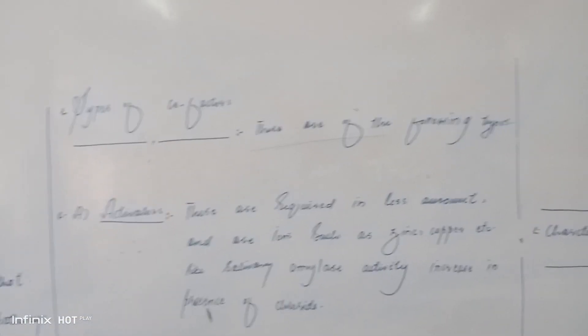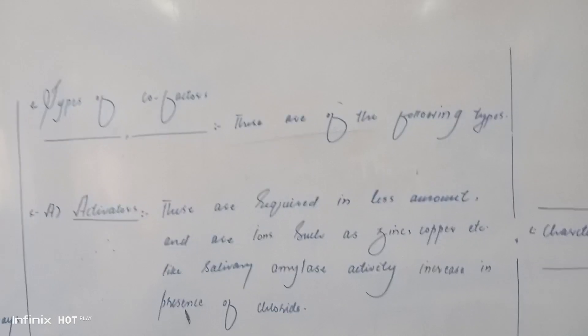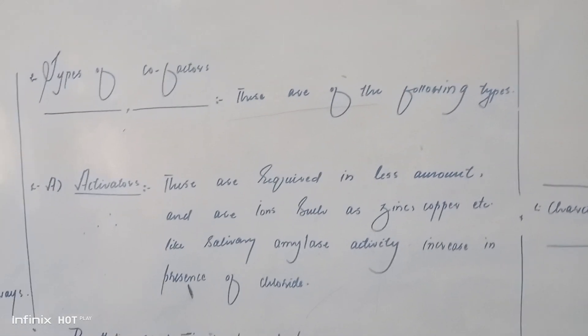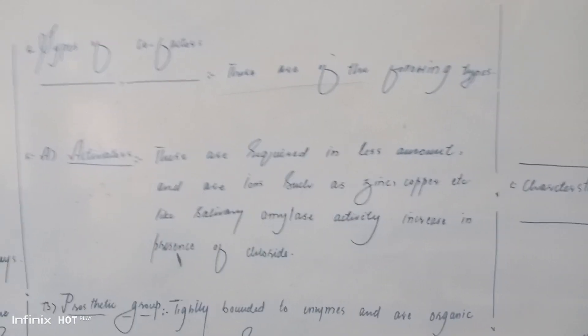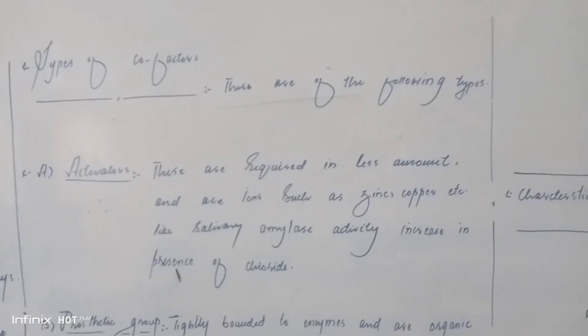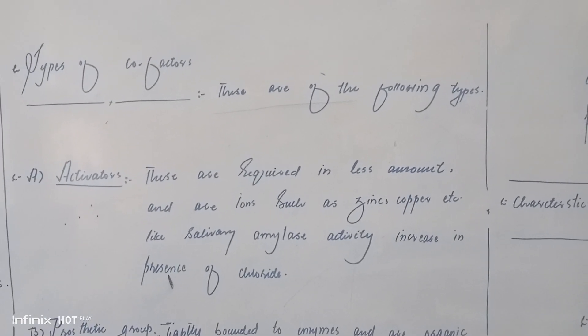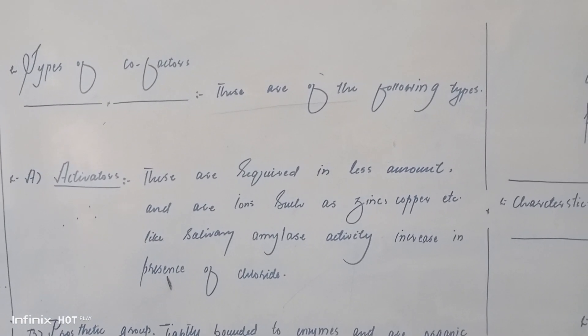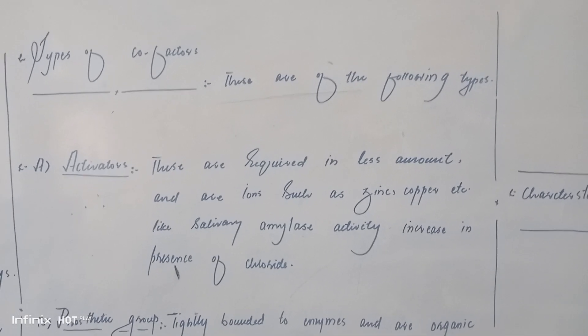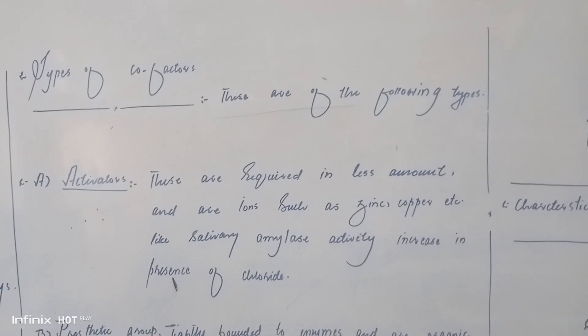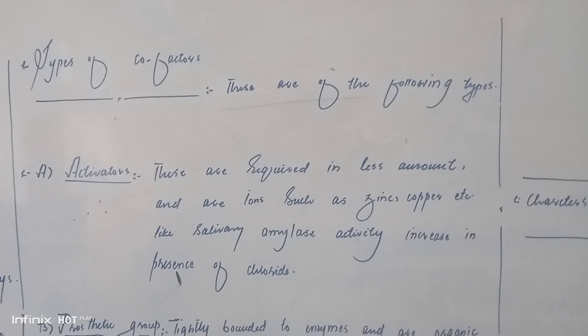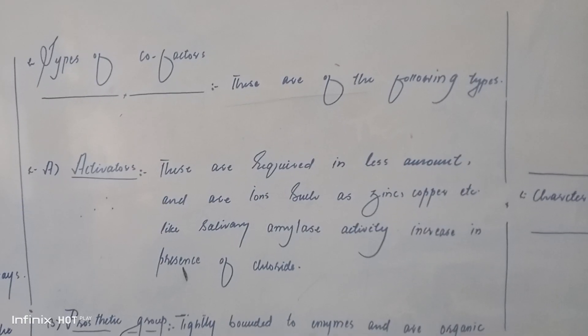Co-factors - types of co-factors. These are of the following types: Activators. Co-factors or activators are required in less amount and are ions such as zinc, copper, etc. For example, salivary amylase activity increases in presence of chloride.